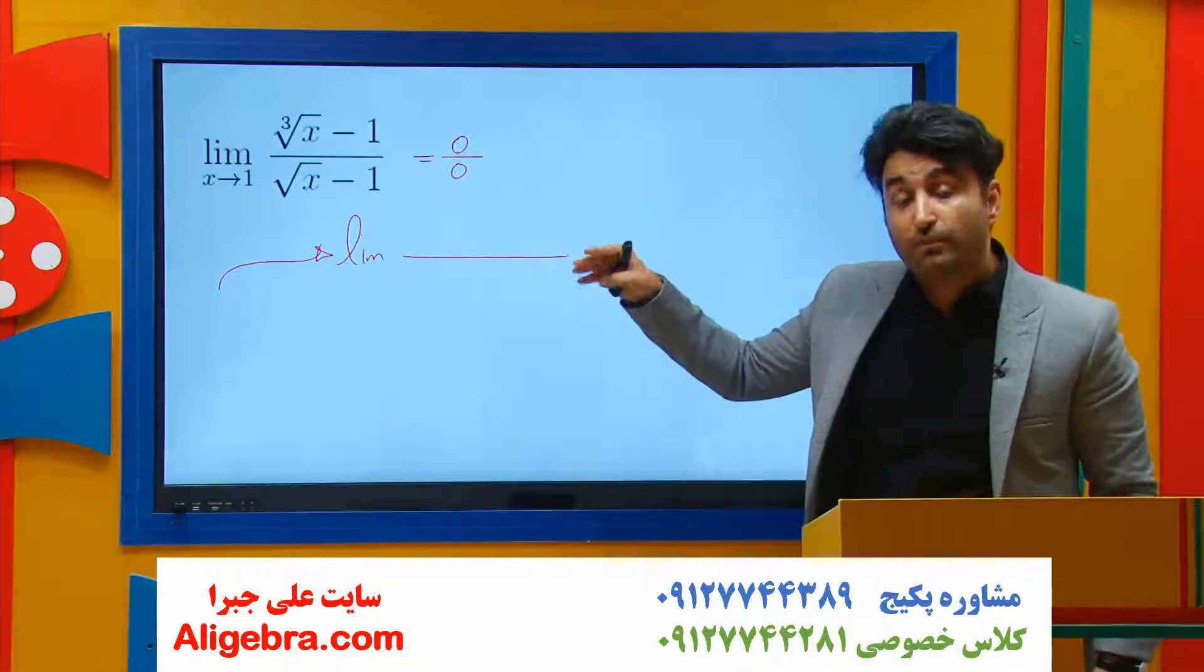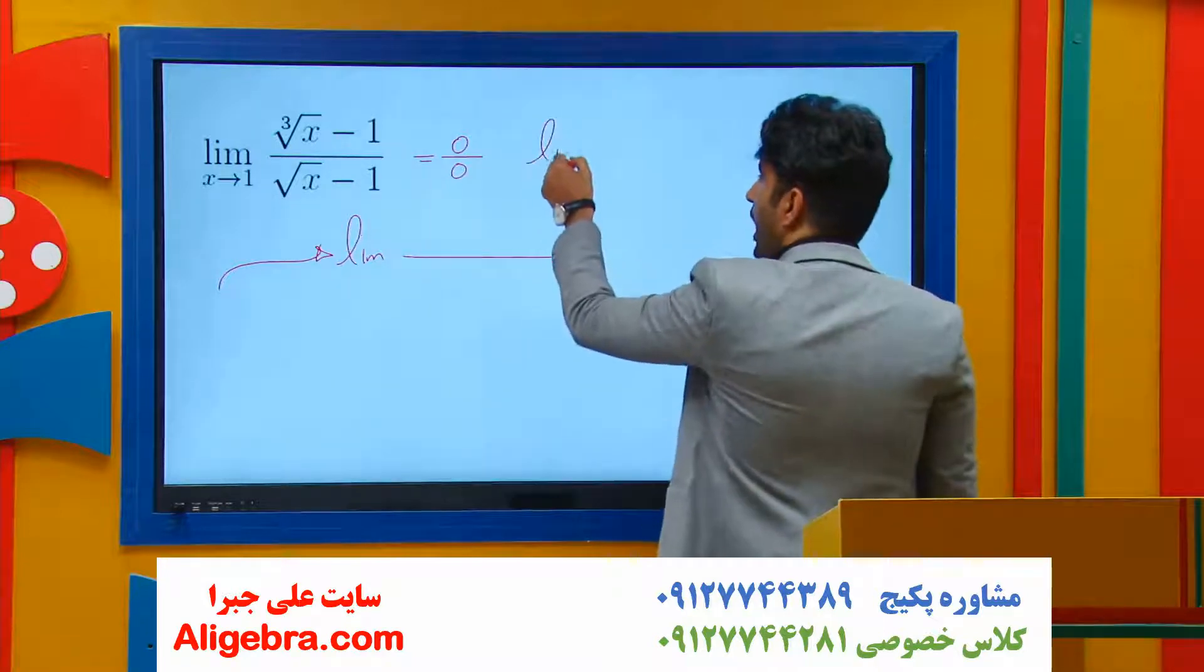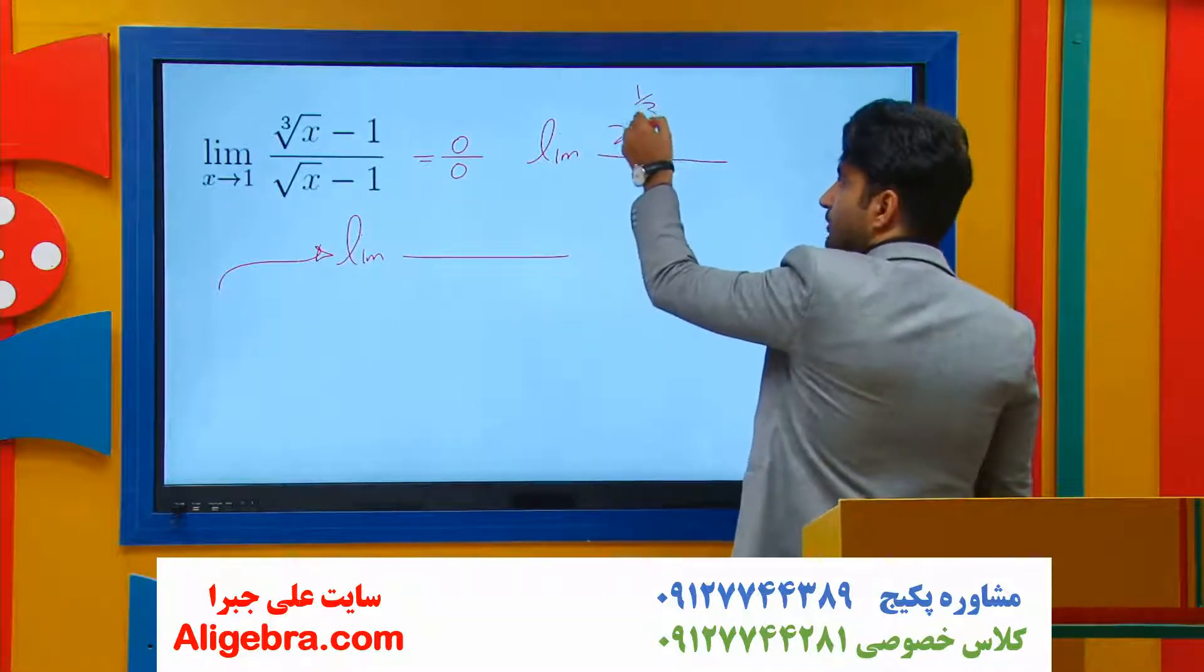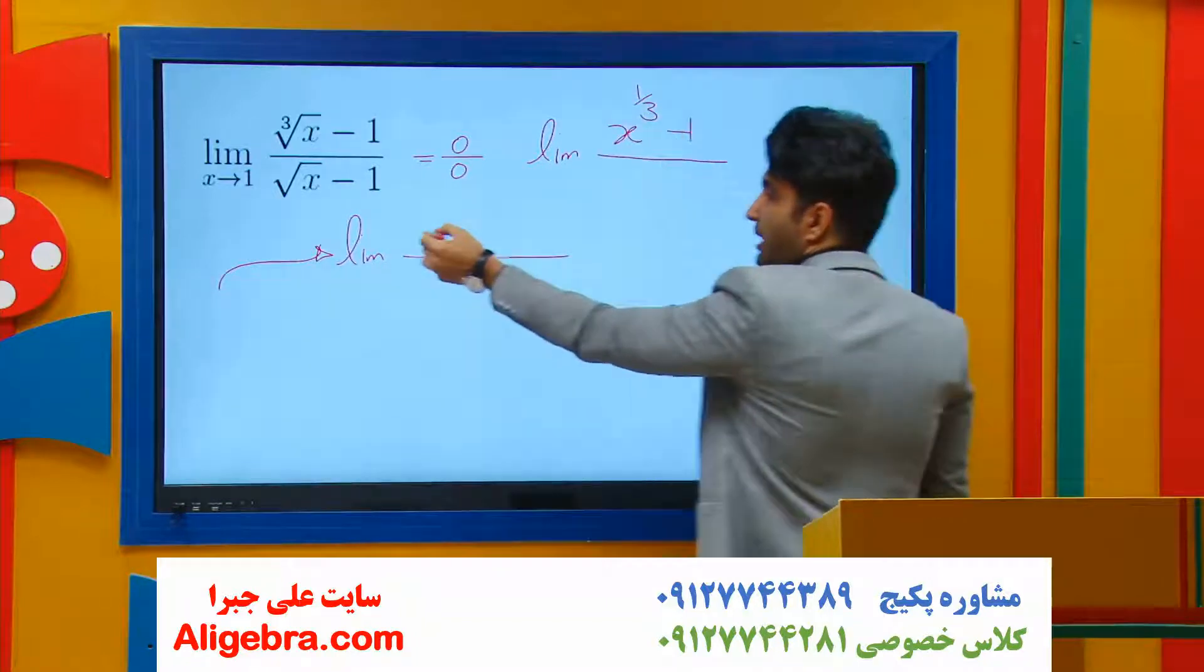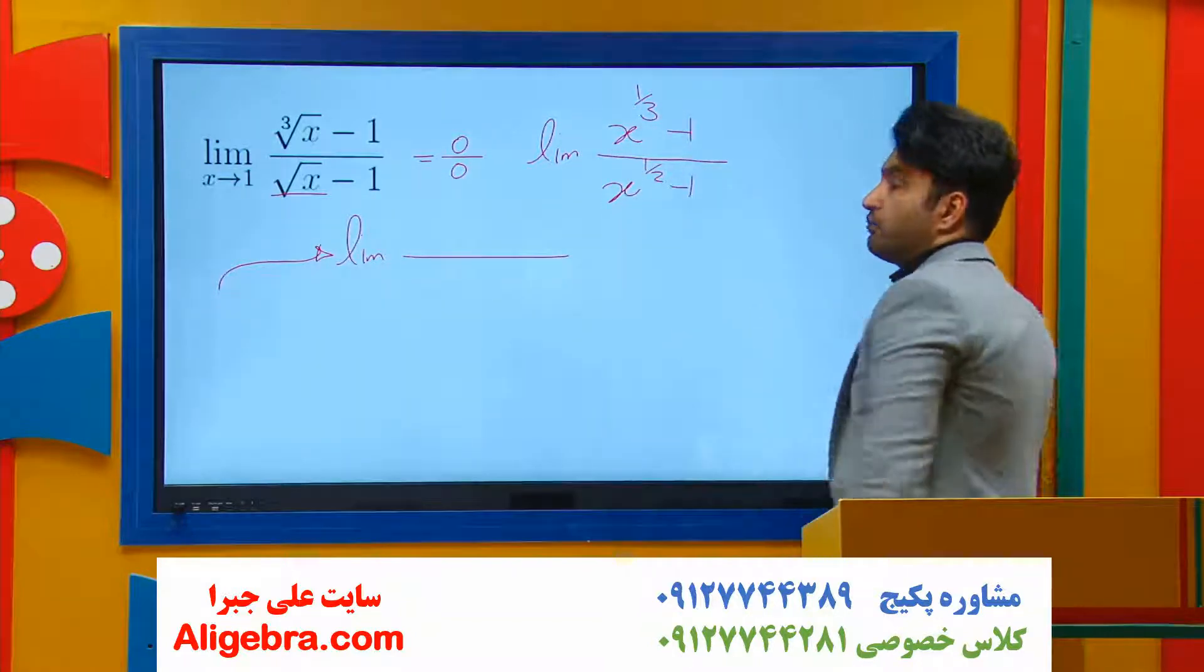Convert the radical form into the exponential form. So I have the limit. On top, the cube root of x is x to the 1 over 3 minus 1. And on the bottom, the square root of x is x to the 1 over 2 minus 1.